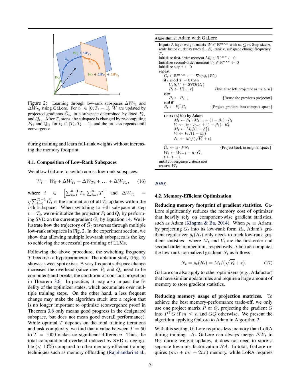Section Summary. In this section, we introduce the Gradient Low-Rank Projection, GaLore, strategy, which focuses on reducing memory consumption by maintaining the gradient statistics of a small core of the gradient in optimizer states instead of the entire gradient itself. GaLore utilizes low-rank updates without altering training dynamics, converges with fixed projection matrices, and allows for switching across low-rank subspaces during training to learn full-rank weights without increasing memory usage.